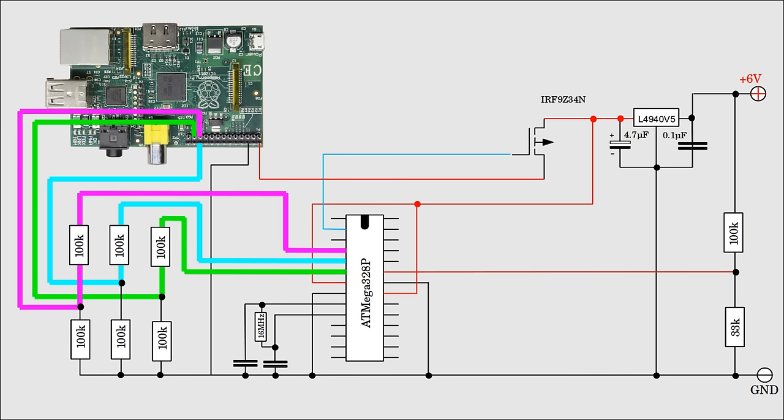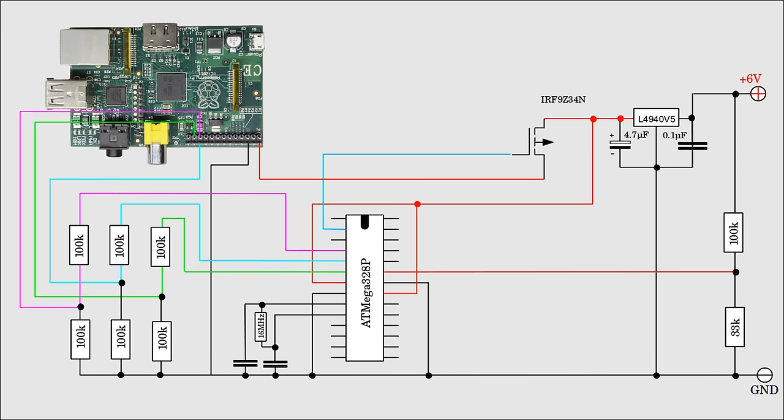Three lines are used to establish communication between the Raspberry Pi and the Arduino. In doing so, the Raspberry Pi can read the battery voltage and so shut down correctly before the voltage is cut off by the Arduino.